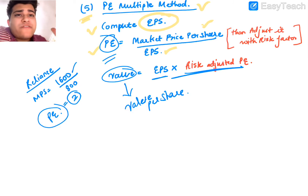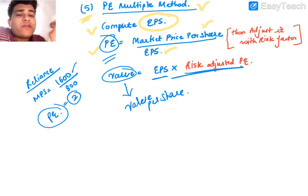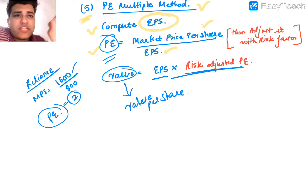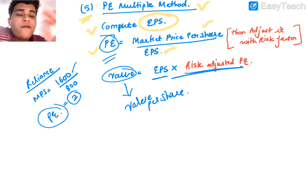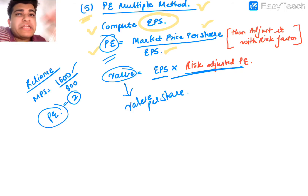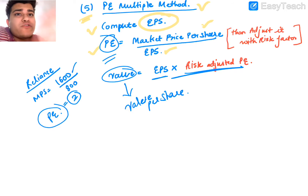We compare the theoretical value per share with the market price to decide the exact valuation. This completes the valuation of shares covered so far. The sixth method — discounted cash flow approach — will be studied in part two in detail.